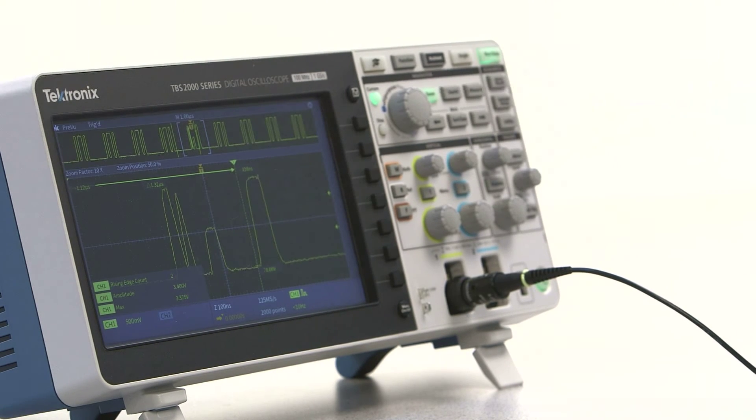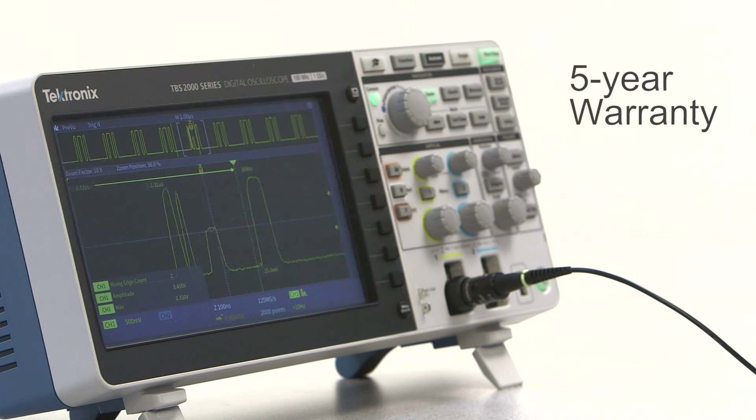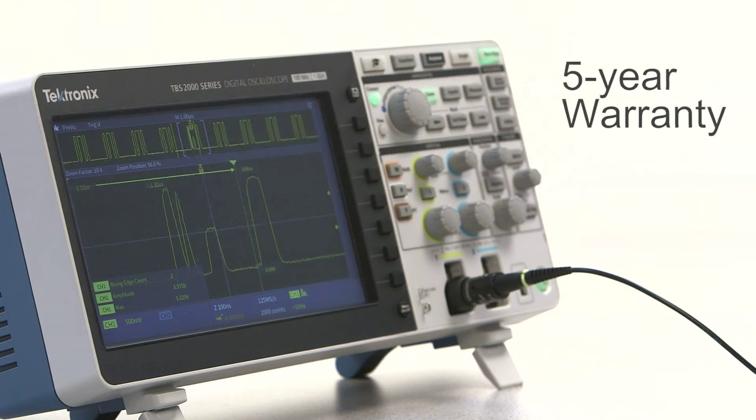The TBS 2000 is built by Tektronix, incorporating years of expertise. It's backed by a five-year warranty, so you'll have confidence in your measurements for years to come.